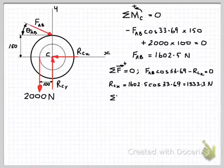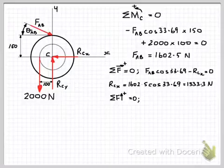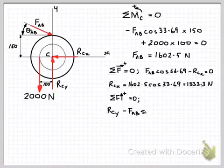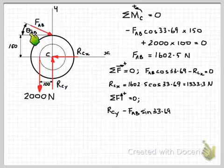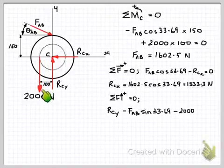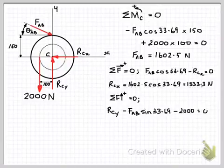Okay, so next we'll do sum of the forces in the vertical direction equals zero. And looking at each of our forces, we have RCY. And we have the vertical component of our force AB up here. So that will be this opposite side of this triangle. So FAB sin 33.69. And we also have, of course, our weight of our load here. 2,000 newtons. And that's all equal to zero.